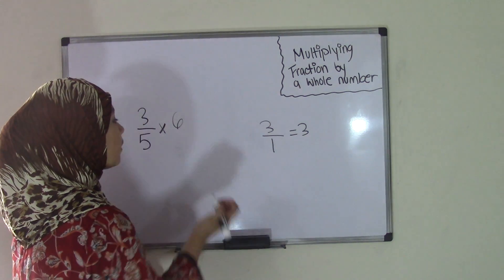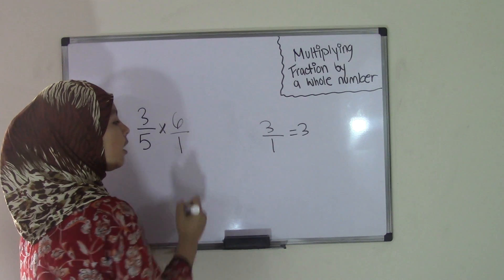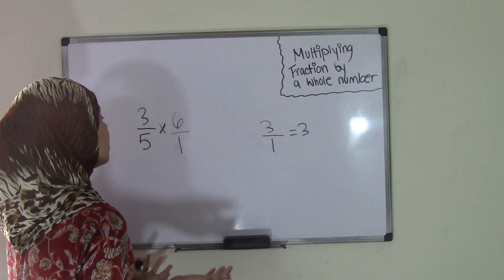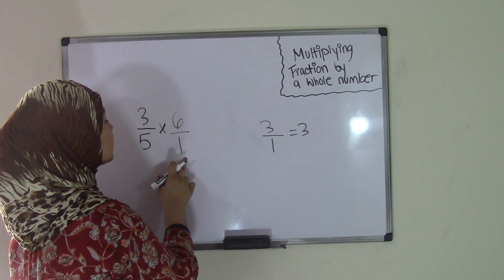So what if we put 6 divided by 1? That would still be 6, but now it becomes a fraction, so it's easier for us to multiply. So now we have 3 fifths times 6 over 1.